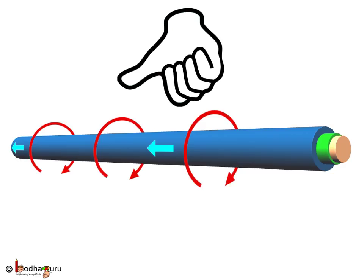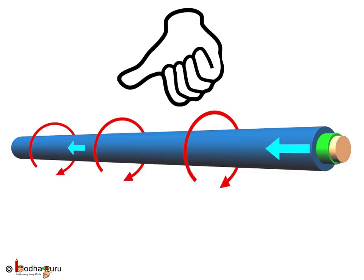We hold the rod like this with right hand such that the thumb points to the direction of the current.